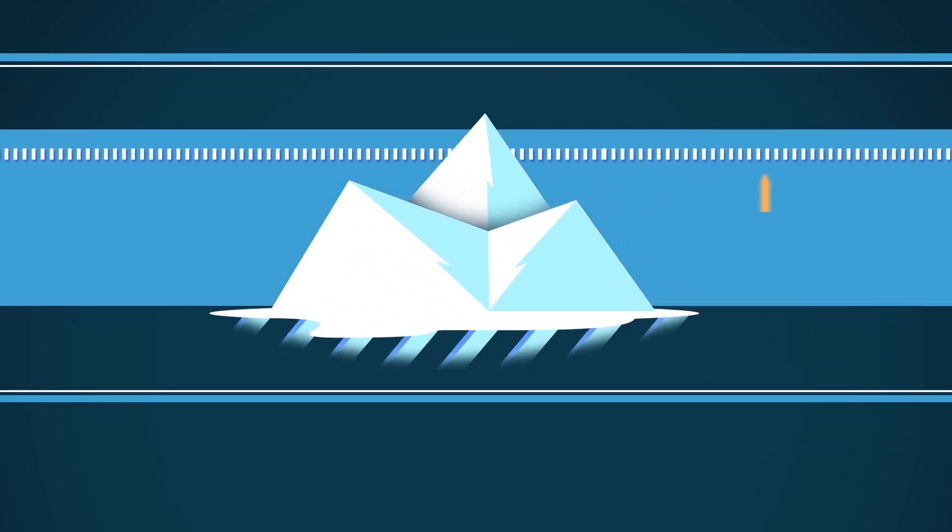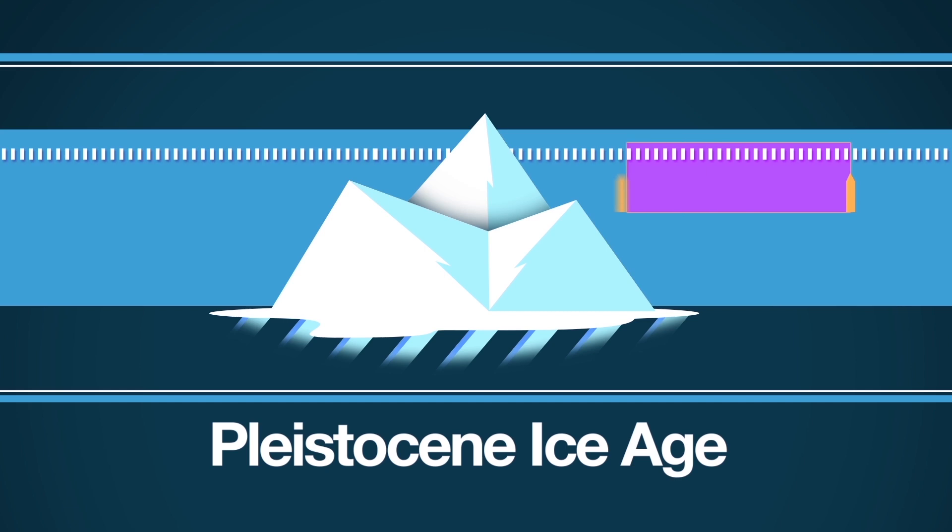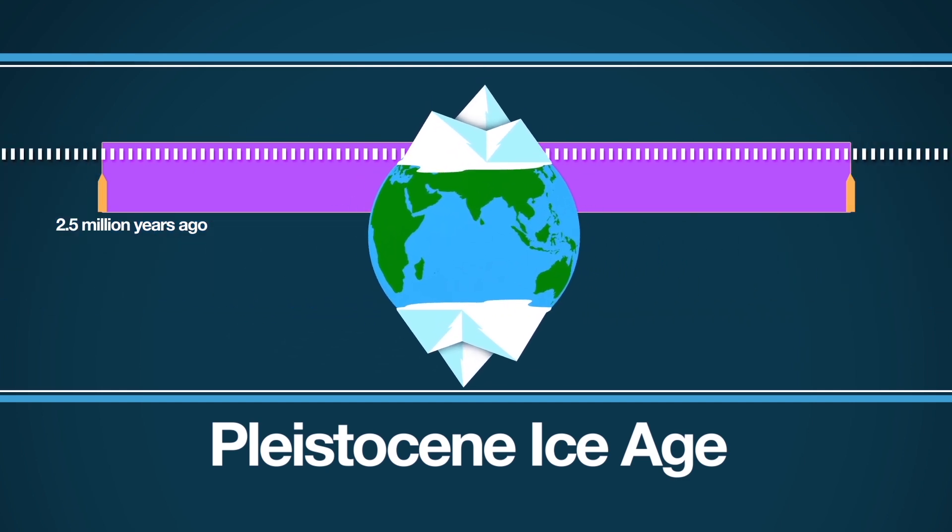This is all part of the Pleistocene Ice Age, which began in earnest 2.5 million years ago. It's still going on, which means that we are still living in an ice age. That's the reason there's so much ice at the poles.